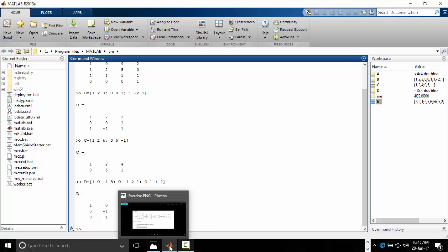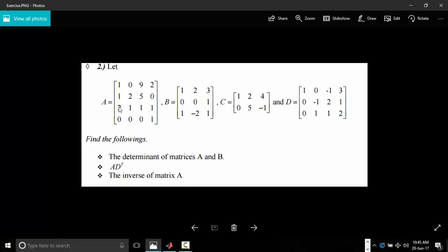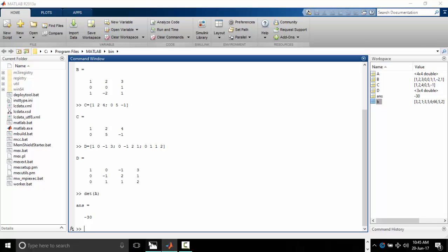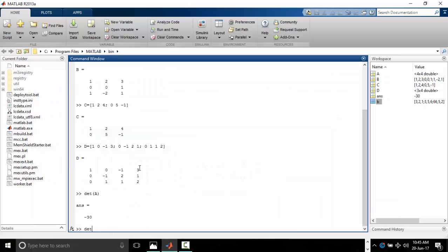Now we've declared our matrix, declared a, b, c and d. So we have to find the determinants of matrices a and b. So let's first find the determinants of a. Just type det. So the determinants of a is minus 30. Then the determinants of b, determinants of b is 4.